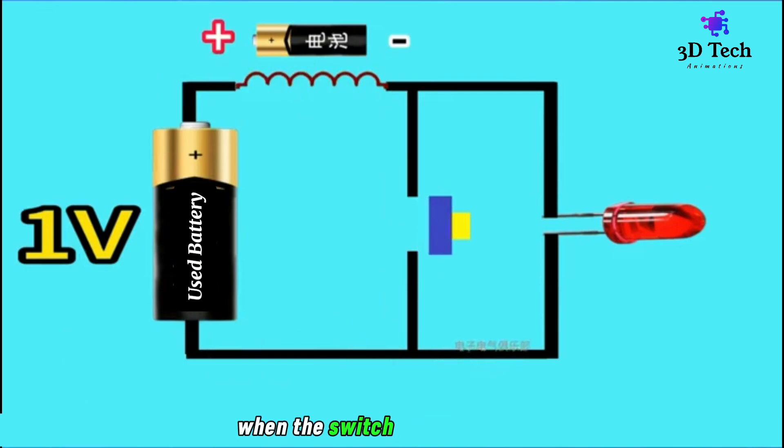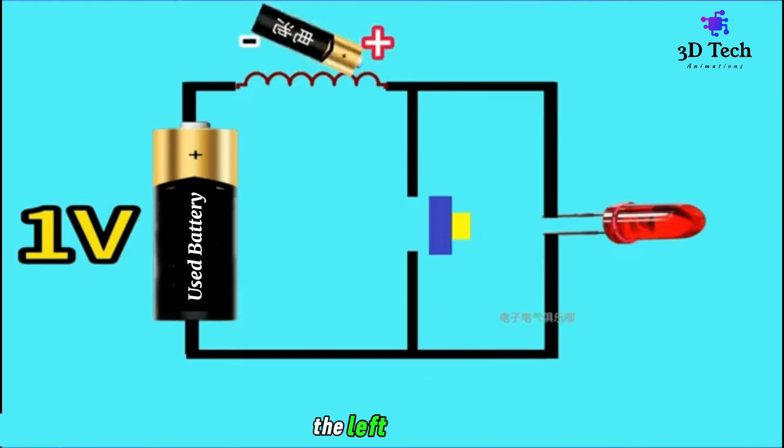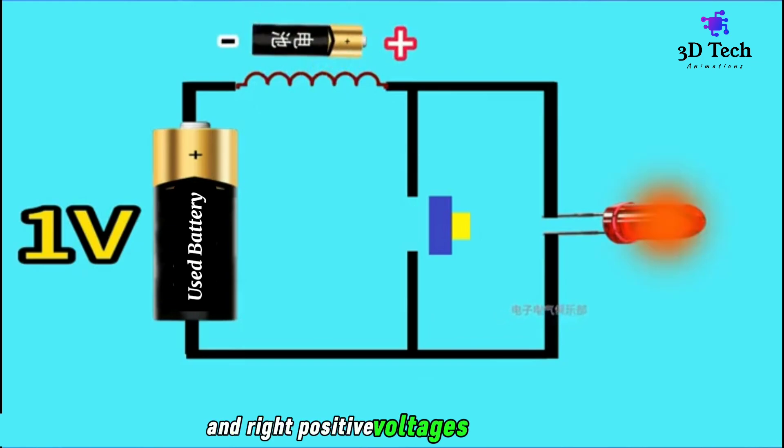When the switch is disconnected, current reduces. Inductance works to prevent the current from decreasing. Left negative and right positive voltages are induced. At this time, the battery voltage and the induced voltage add up to light the LED.